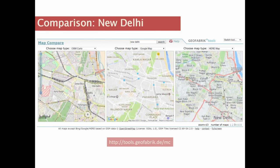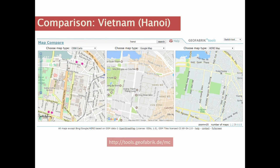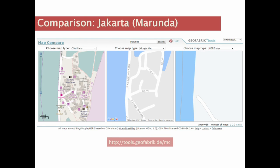Looking at other areas — New Delhi shows similar comparisons between OSM, Google Maps, and HereMap. In Hanoi, Vietnam, OSM also focuses on detailed building footprints. In one of our Jakarta projects, we map small community-owned kiosks, which are rarely mapped by other mapping platforms because they tend to focus more on larger businesses.